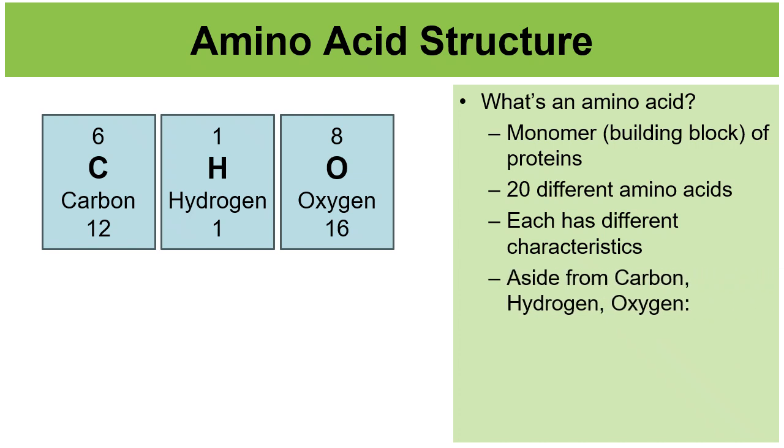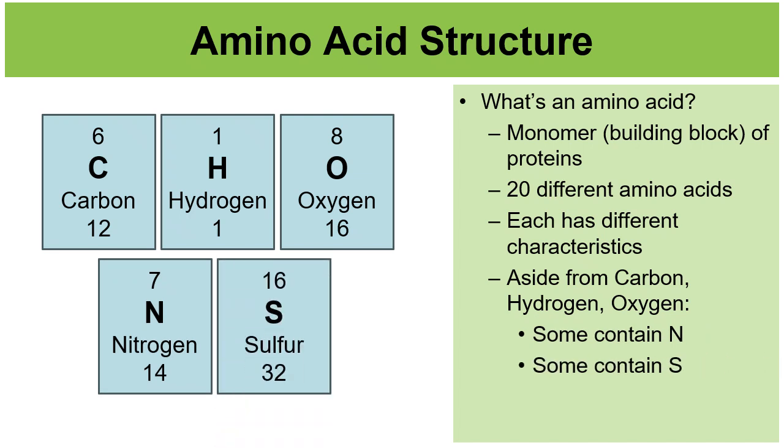Now, when you look at the atomic structure of amino acids, they're organic molecules. So they're going to be built around carbon and will have hydrogen and oxygen in them. Also, some of them contain nitrogen, some of them contain sulfur. So these atoms here are constantly being broken down and reshuffled to make the various molecules that are in our cells.